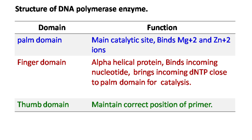To summarize the structure of DNA polymerase enzyme: it has three main domains — the palm domain, finger domain, and thumb domain. The palm domain is the main catalytic site, binding magnesium and zinc ions for catalysis. The finger domain has the alpha-helical protein that binds the incoming nucleotide and brings the dNTP close to the palm domain once a correct base pairing is formed. The thumb domain maintains the correct position of the primer.